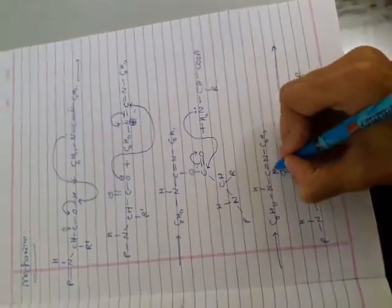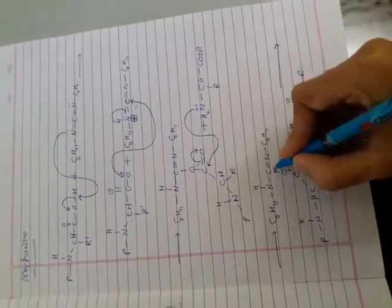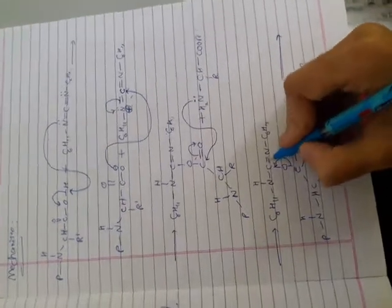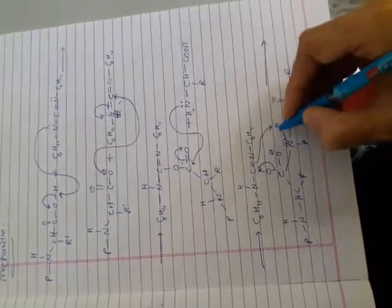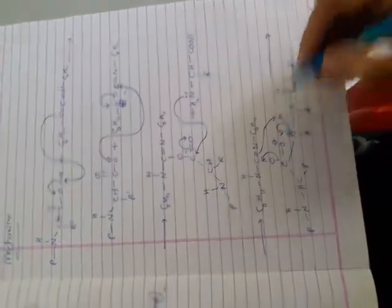This shifts to here. So, double bond O is formed. This abstracts the hydrogen. And this goes to here. So, peptide is formed. I will write down now.